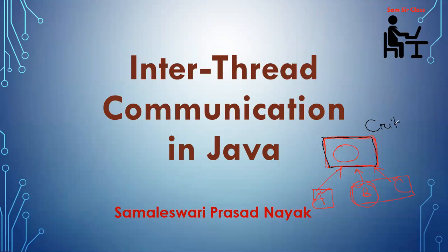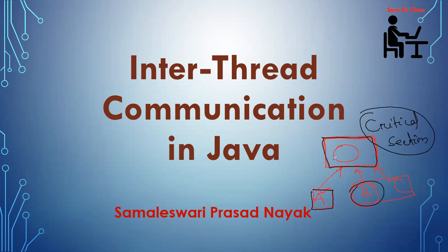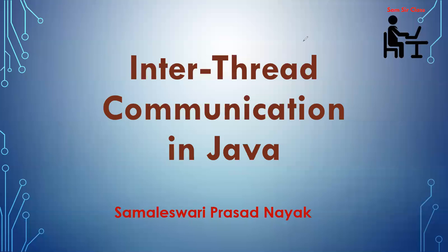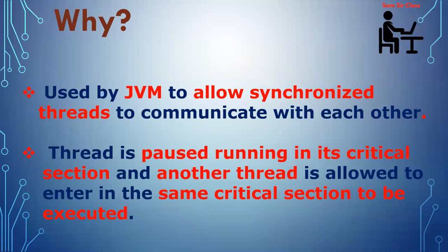This common section of code is known as the critical section. Cooperation or interthread communication is a mechanism in which a currently running thread — suppose A — needs some resources from B or C, so A will pause its execution and allow other threads to enter their critical section. Whenever B completes its execution it will notify A that it has completed, so A can continue. This is interthread communication: multiple threads communicate through a common resource.